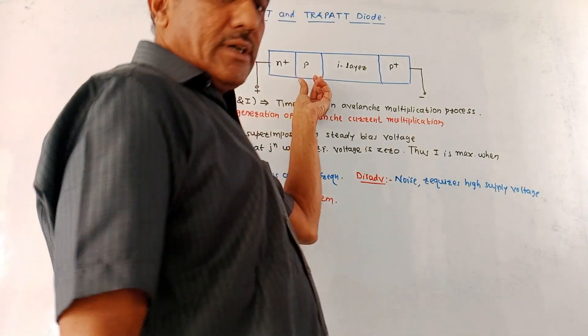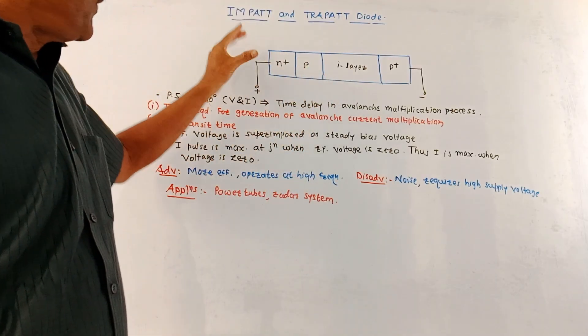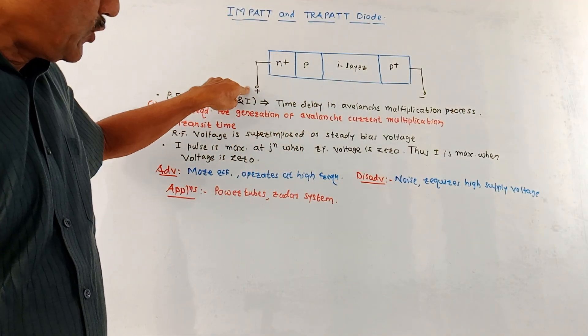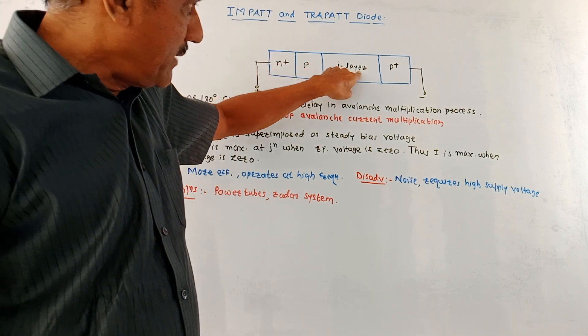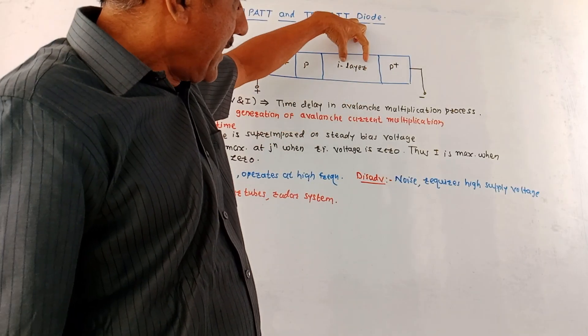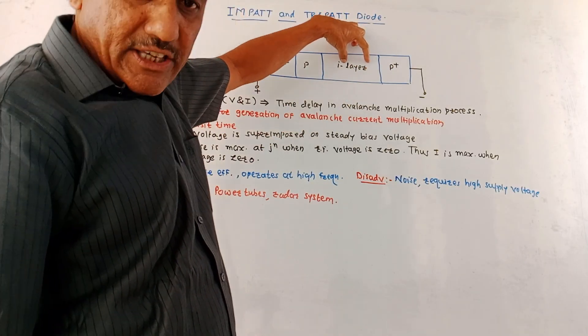This diagram shows a typical construction of IMPATT diode. It consists of N plus region which is connected to positive side. Then P region in between. At the other end we have P plus region and in between this intrinsic layer is formed.